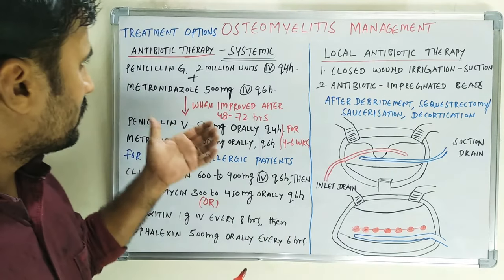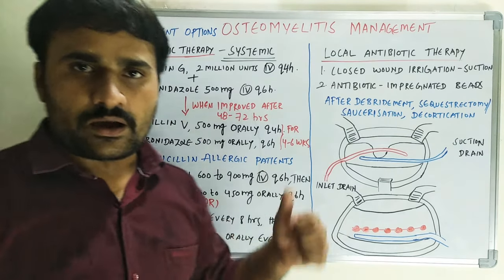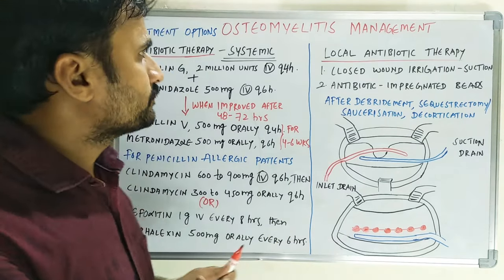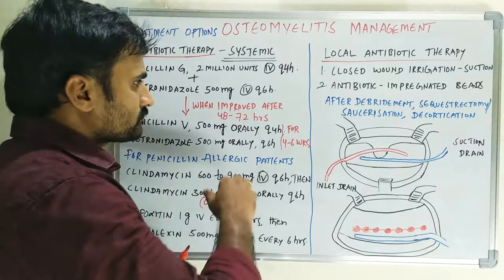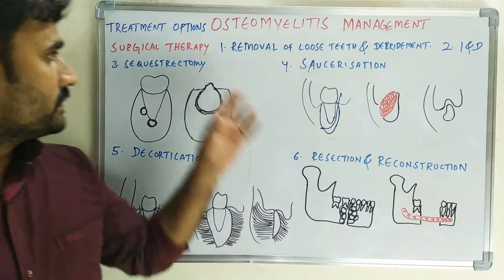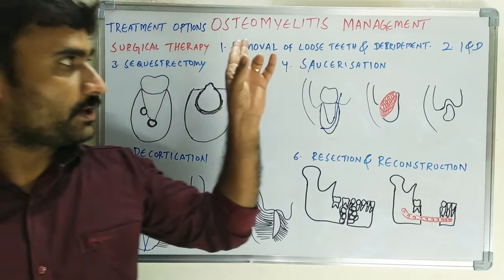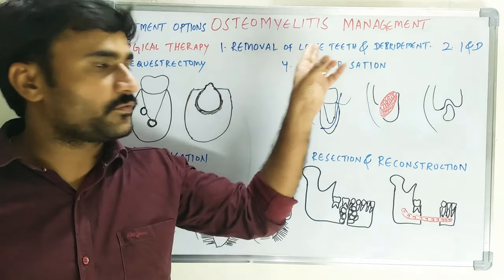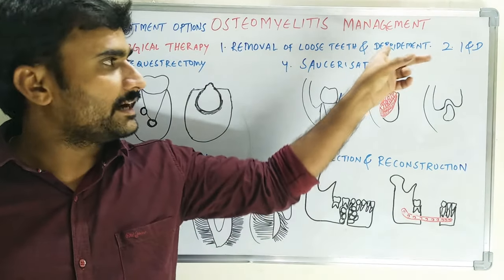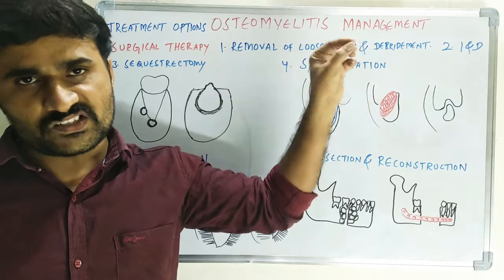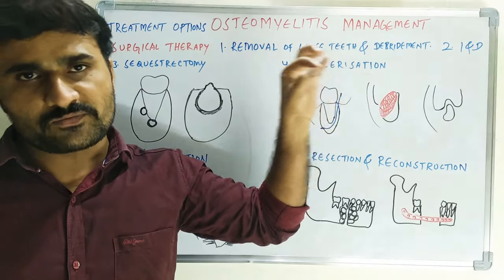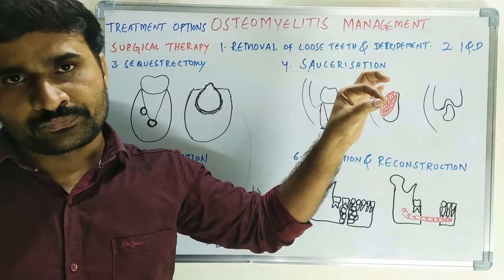Now we will see the surgical options. In surgical therapy, the first is removal of loose teeth and debridement — this is the simplest form of surgical therapy.